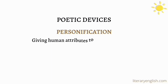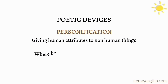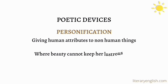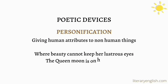The next poetic device is personification. Personification is giving human attributes to non-human things. In the following lines of the poem, for example: 'where beauty cannot keep her lustrous eyes' and 'the queen moon is on her throne,' the poet has given beauty and queen attributes that are associated with human beings.